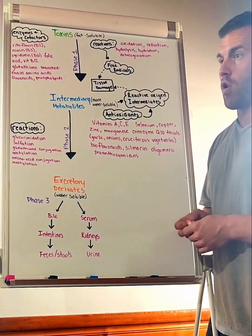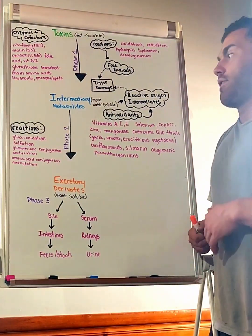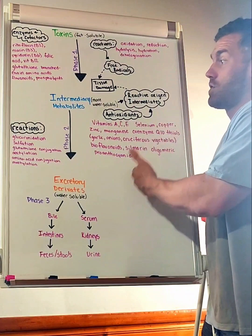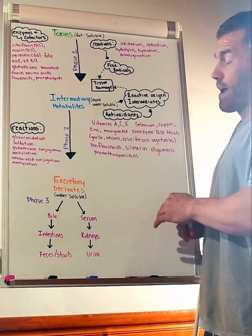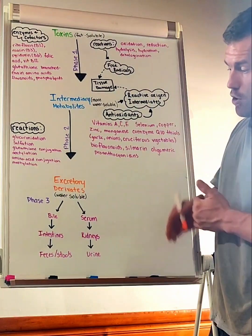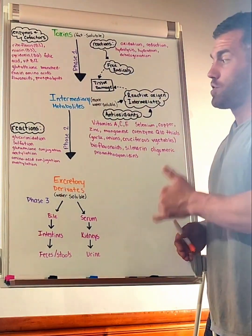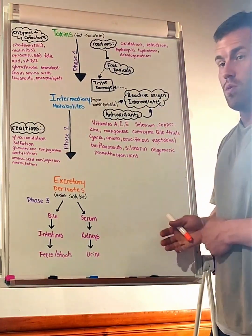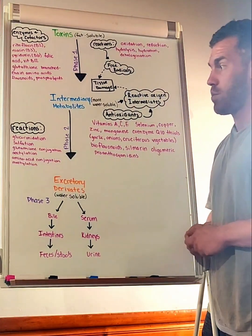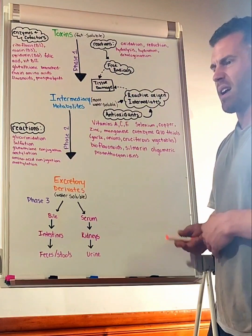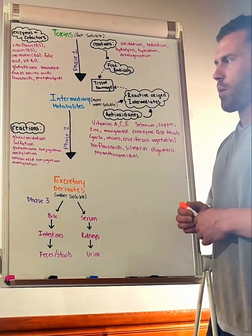If we have a slowdown in phase two, which is probably even worse, now we have phase one pushing things in at a normal rate and phase two not able to delegate those toxins or waste products. That's a problem because now we're going to have this spillover where we're going to have a lot more oxidative damage going on potentially.